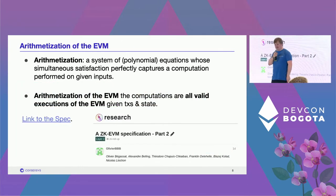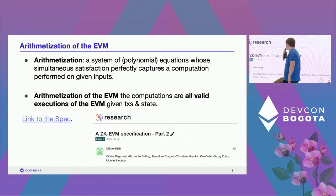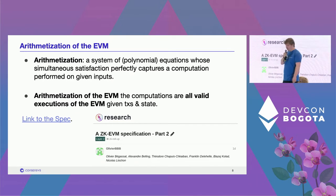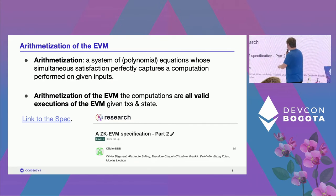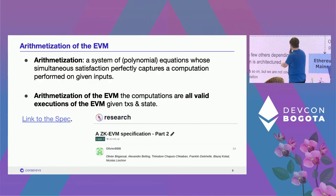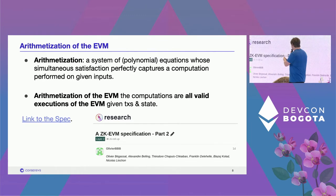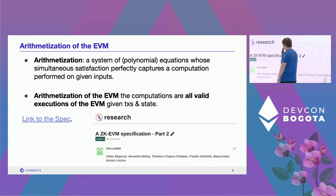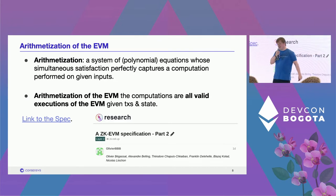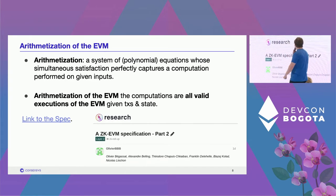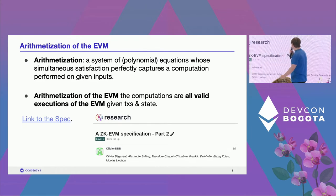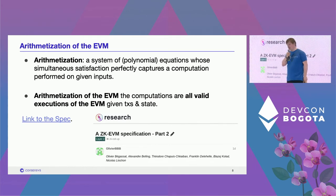On Monday we published an updated and expanded version of the spec, which is now a hefty document. Its contents are the arithmetization of the EVM. When we talk about arithmetization, we mean constructing a system of polynomial equations whose simultaneous satisfaction perfectly encapsulates a particular computation on a particular set of inputs. For us, the computations of interest are valid executions of the Ethereum virtual machine, given a set of transactions and an initial state.